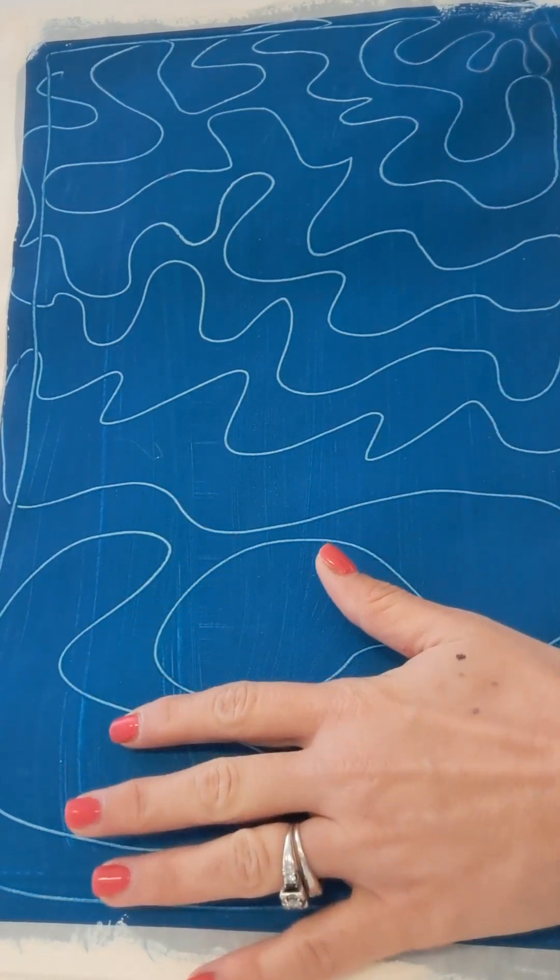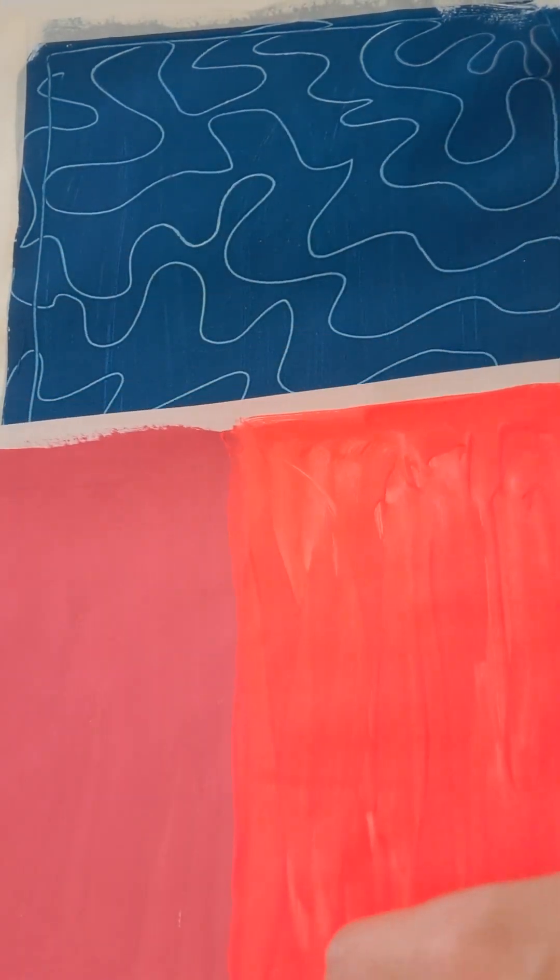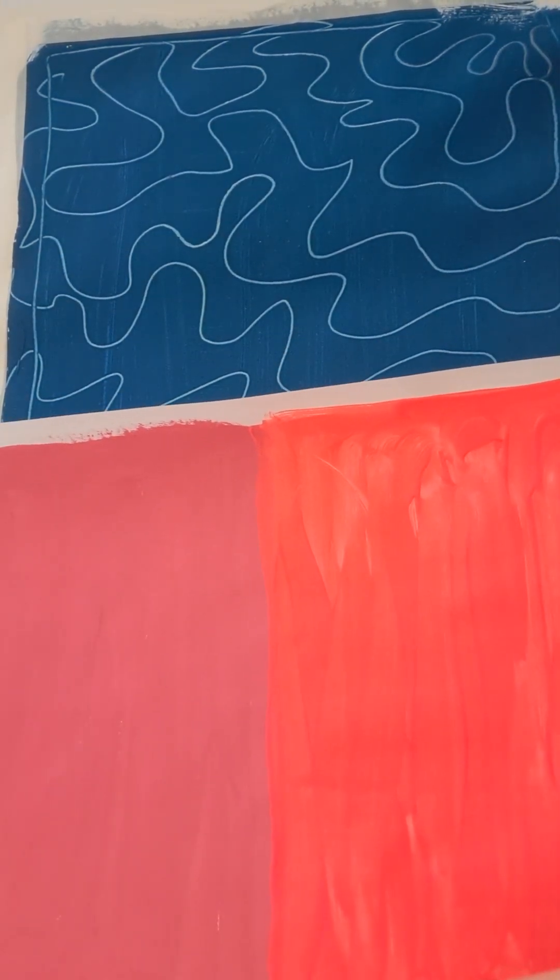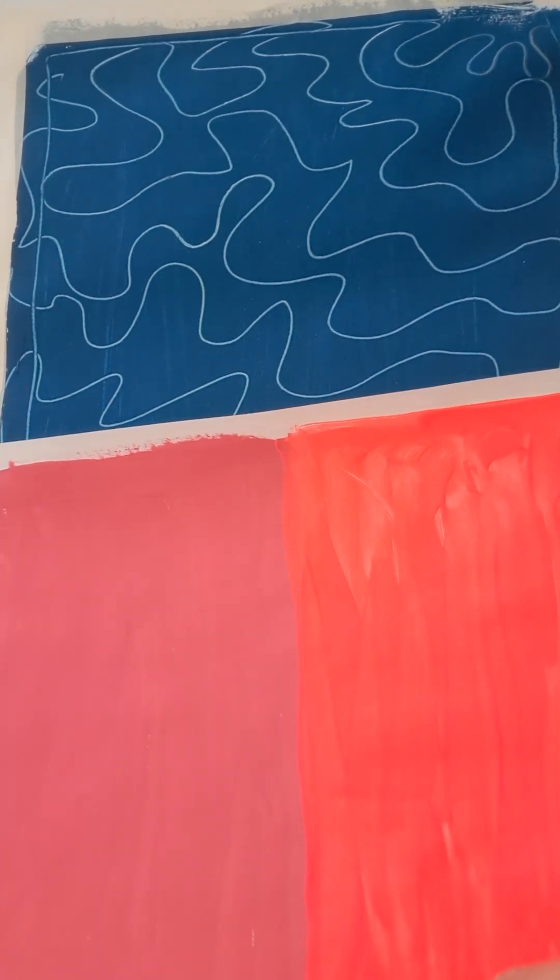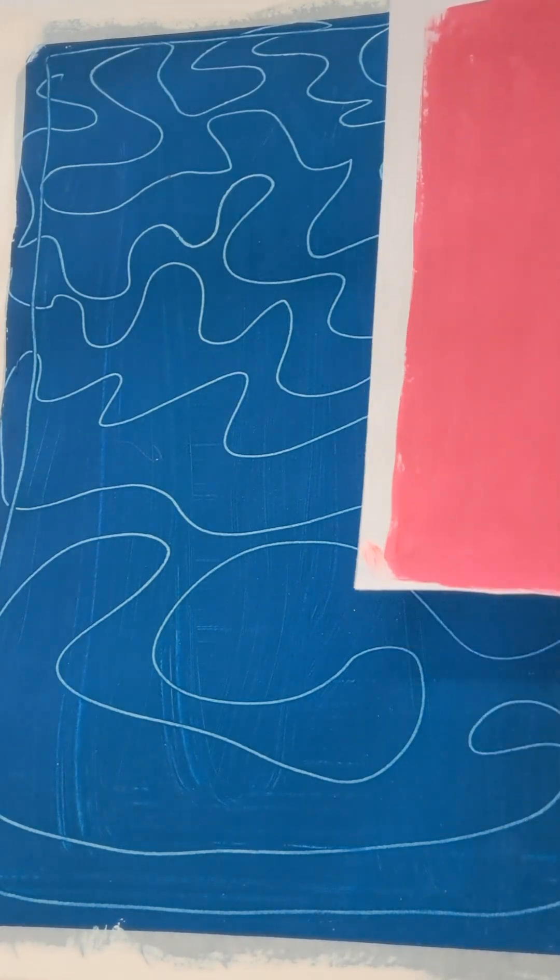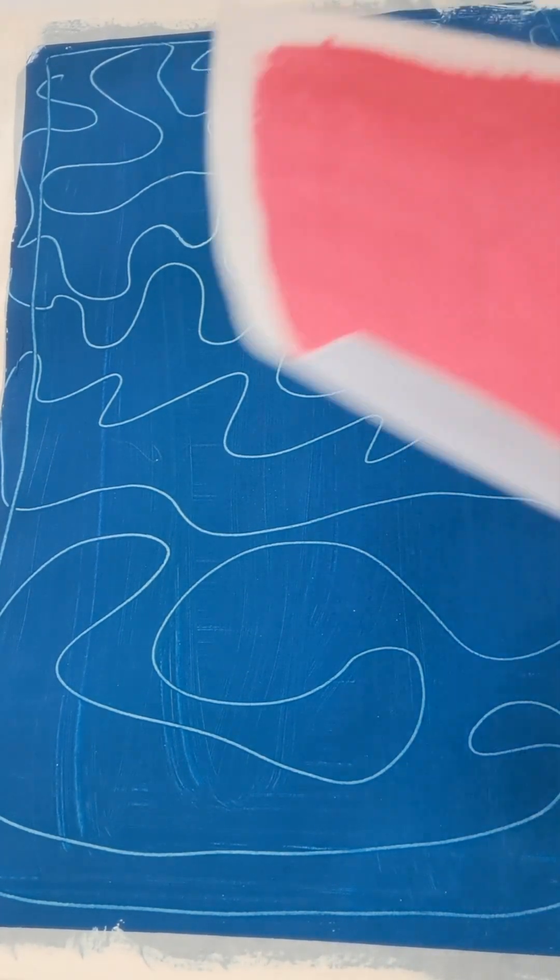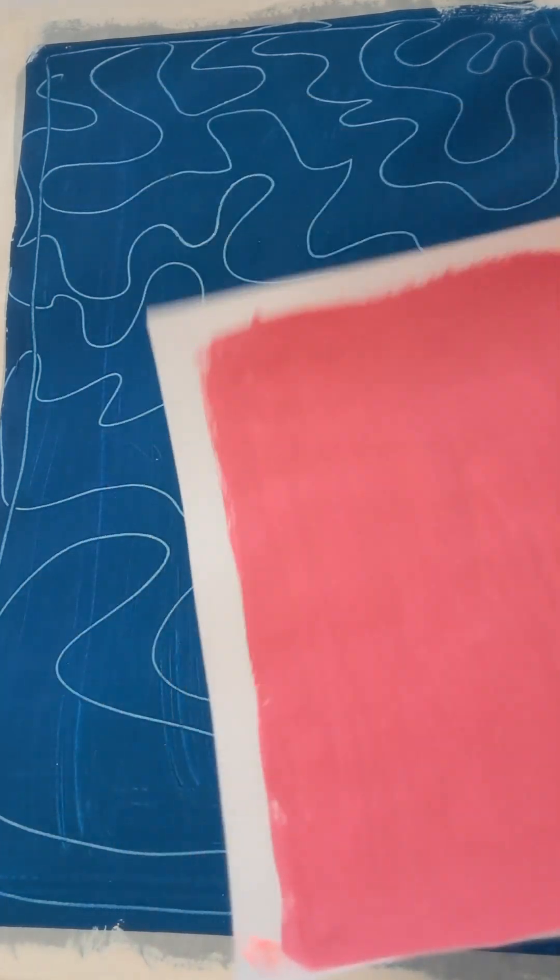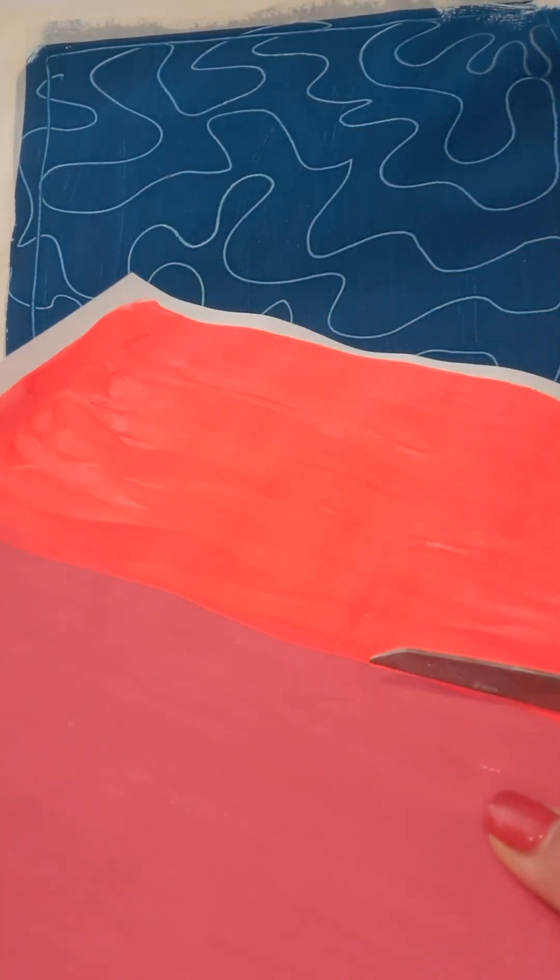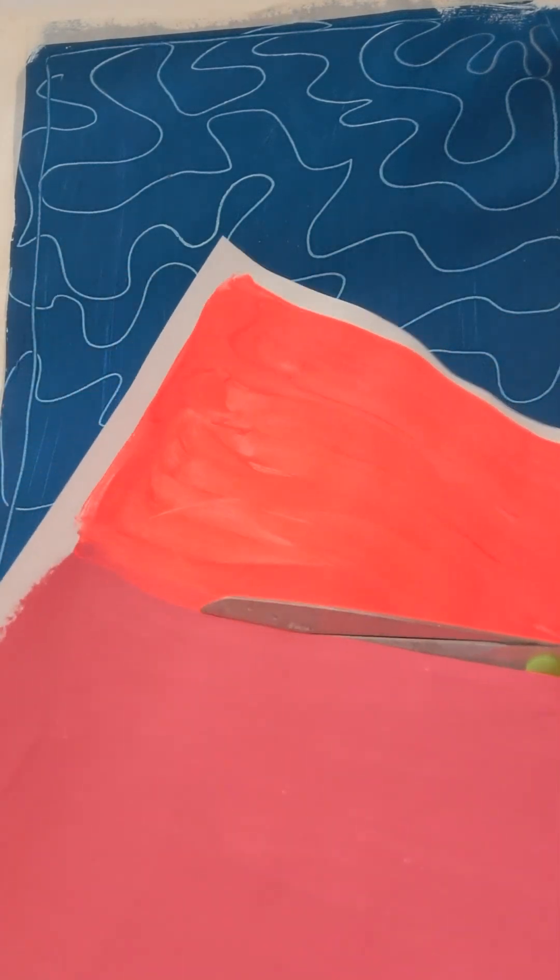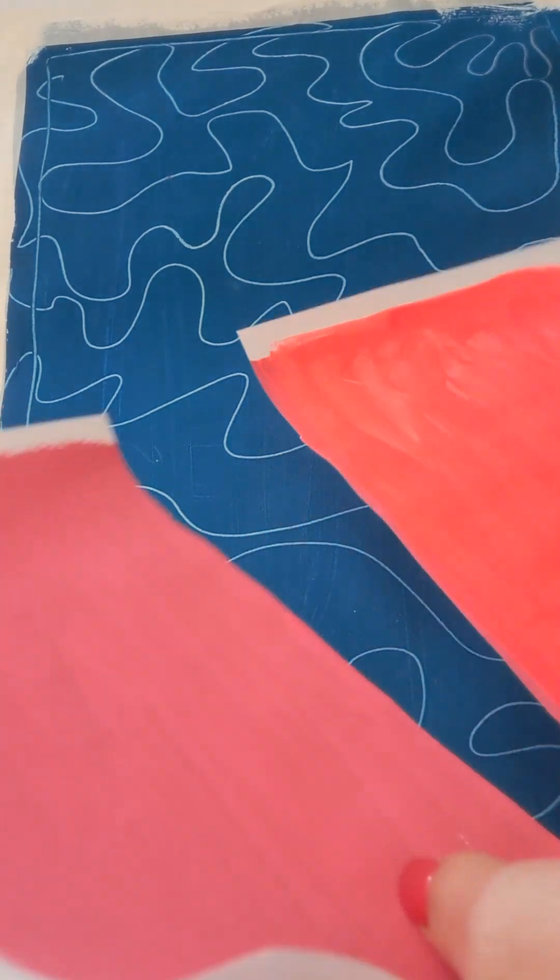Today we have our background paper that we made last week and we have this paper that has two colors on it that we made as well last week. So today what we're going to be doing is we're going to be cutting out the shapes for our flamingos and we're going to be assembling it. So here's what I'll have you guys do. First thing will be to cut this paper in half right at the line where the two colors meet.